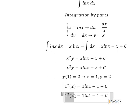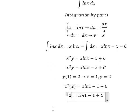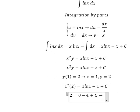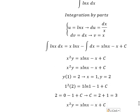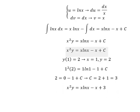This gives us 2 on one side and 0 on the other. So negative 1 goes to the left and we have C equals 3. We put C equals 3 back into the equation and that is the final answer. This is the end — thank you for watching.